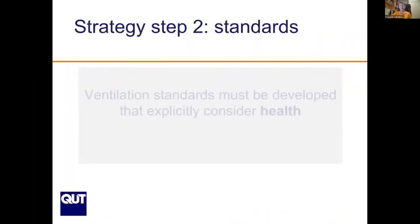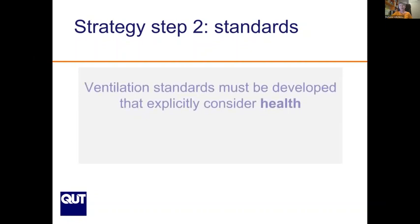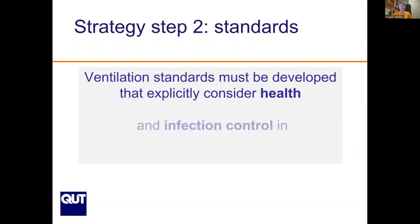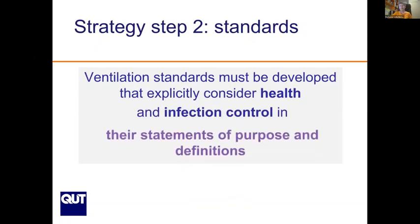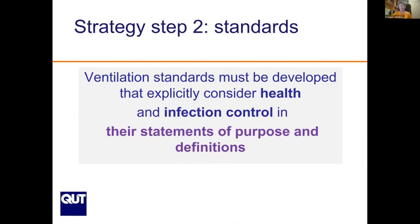Strategy Step 2: Ventilation standards must be developed that explicitly consider health — including infection control — in their statements of purpose and definitions. If this is not in building and ventilation standards, nothing will happen voluntarily, because even a small increase in costs will prevent implementation.